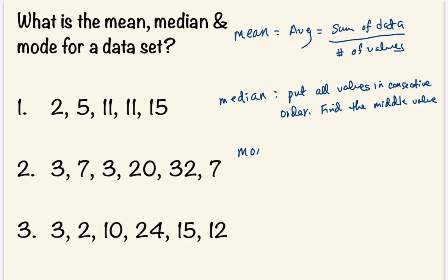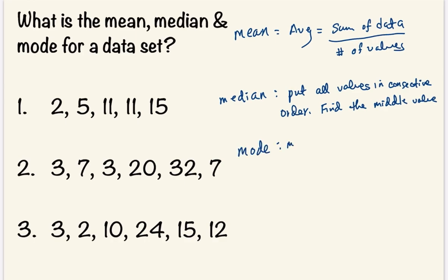And mode, mode is actually the easiest. This is the value that shows up the most frequently.